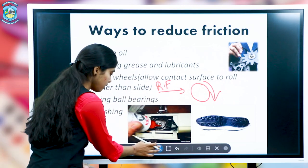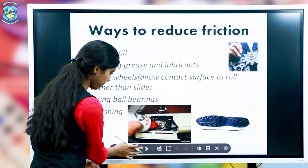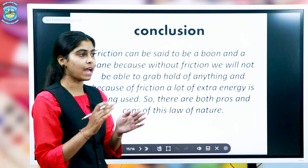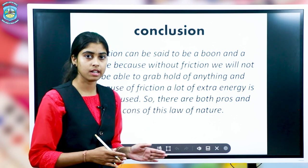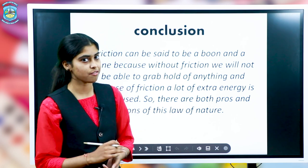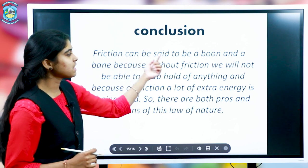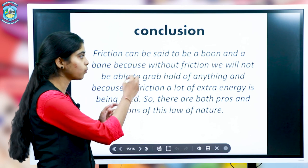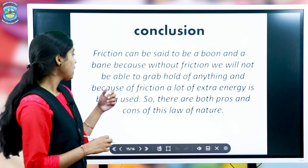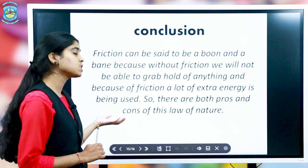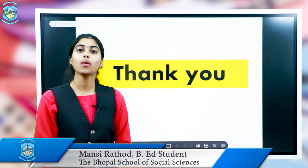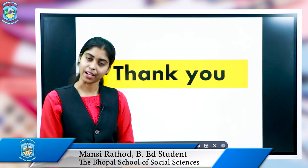In conclusion, we have studied about friction — its types, why it is needed, and how to increase and decrease it. Friction can be said to be a boon or a bane, because without friction we are not able to hold things, ride, or walk. But because of friction, a lot of extra energy is used. So there are both pros and cons of friction. I hope you all have an idea of friction — thank you.